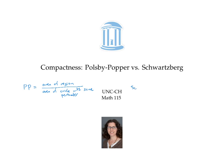The Schwartzberg method, on the other hand, is calculated by focusing on perimeters. It takes the perimeter of a circle with the same area as the region, and divides that by the perimeter of the region. By writing the ratio in this order — with the perimeter of the circle on top and the perimeter of the region on the bottom — we ensure a number between zero and one, because a circle is the shape with the smallest perimeter for its area. So the perimeter of a circle with the same area as the region will always be less than or equal to the perimeter of the region.